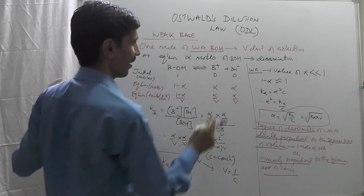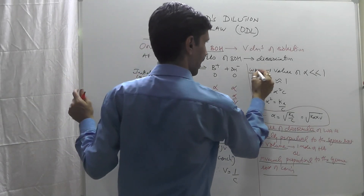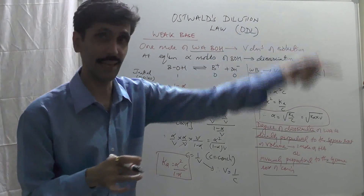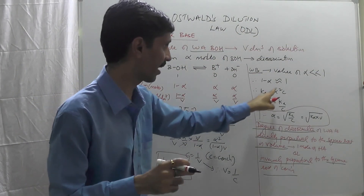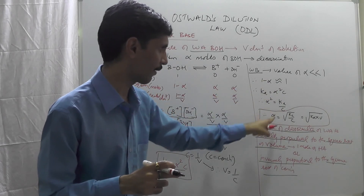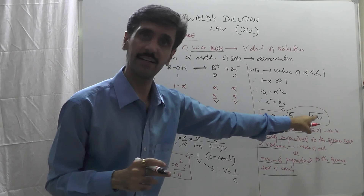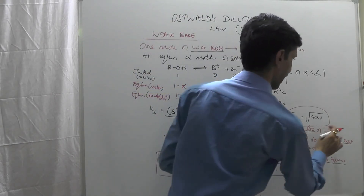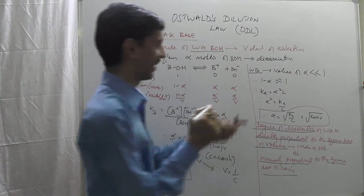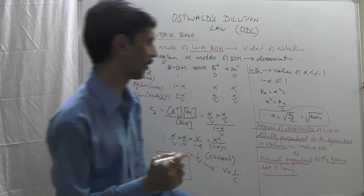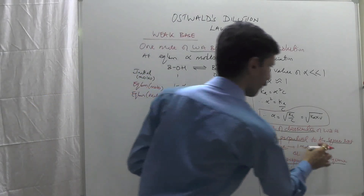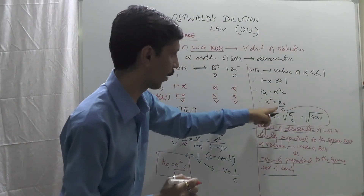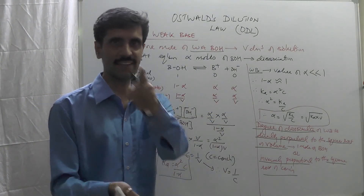Everything proceeds the same way — V cancels, and using C = 1/V, we get Kb = alpha²C / (1 − alpha). Since alpha is very small for a weak base, (1 − alpha) ≈ 1, so Kb = alpha²C, giving alpha = √(Kb/C) = √(Kb × V). Therefore, the degree of dissociation of a weak base is directly proportional to the square root of the volume of solution containing one mole of BOH, or inversely proportional to the square root of concentration.